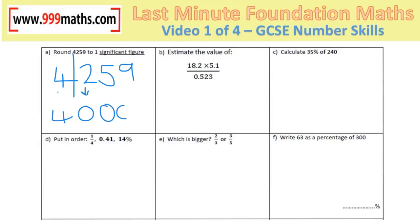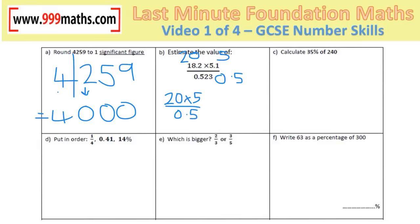Estimating requires you to round to one significant figure. 18.2 rounds to 20, 5.1 rounds to 5, 0.523 rounds to 0.5. We rewrite the calculation: 20 times 5 is 100, and 100 divided by 0.5 is 200.